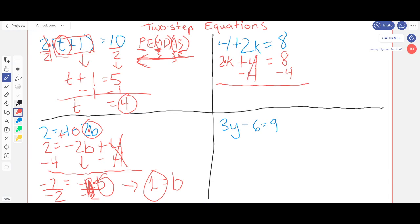4 minus 4 is 0 and 8 minus 4 is 4. We could just bring the 2k down. Only thing we have left is to divide both sides by 2, that cancels, so we get k equals 4 divided by 2 which is 2.